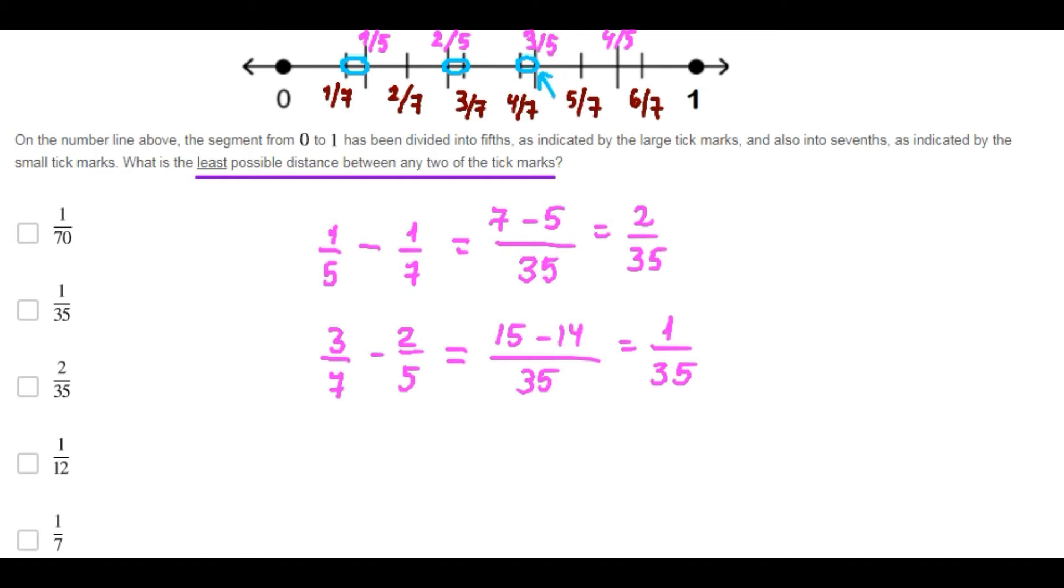And finally, let's try with this one. The difference between these two marks is three fifths minus four sevenths. Again, the least common denominator is thirty-five. We have here twenty-one minus twenty, and this is one over thirty-five.